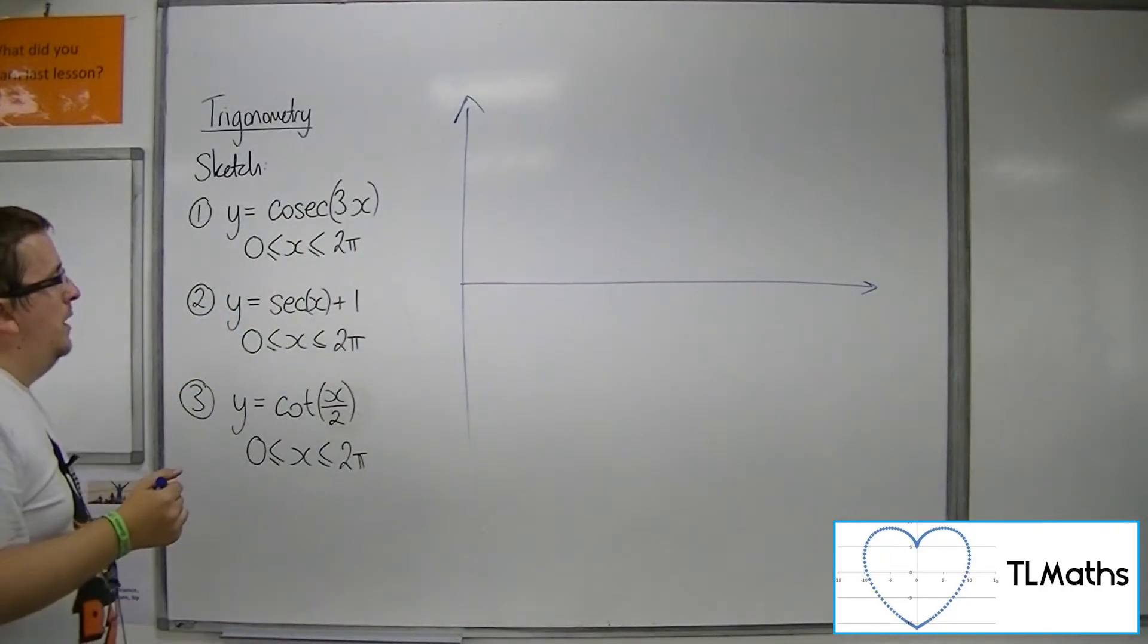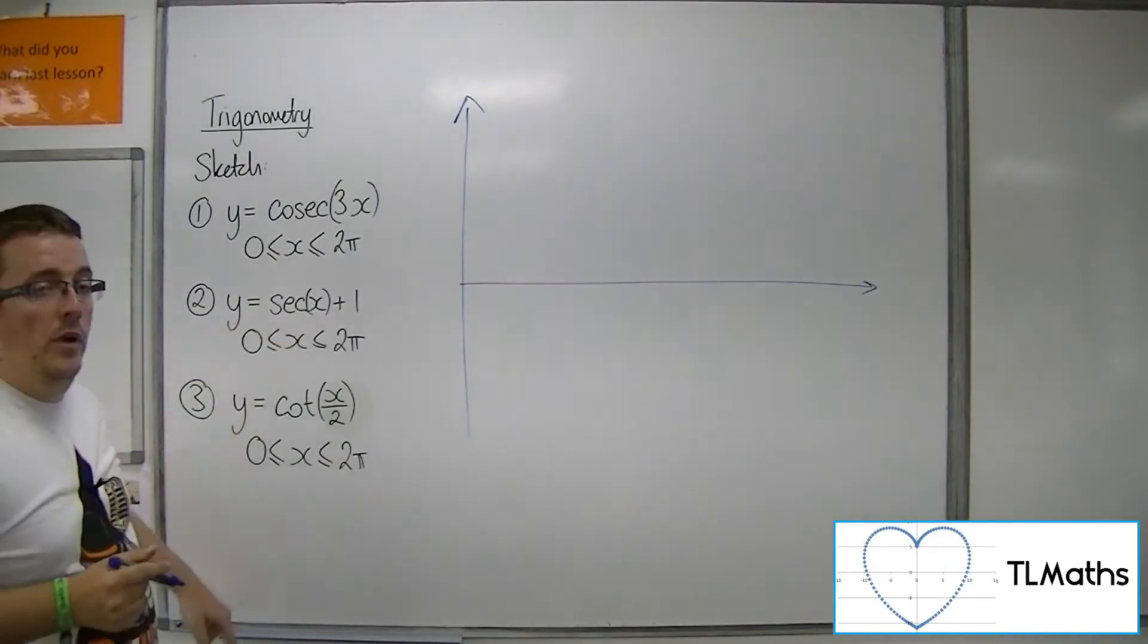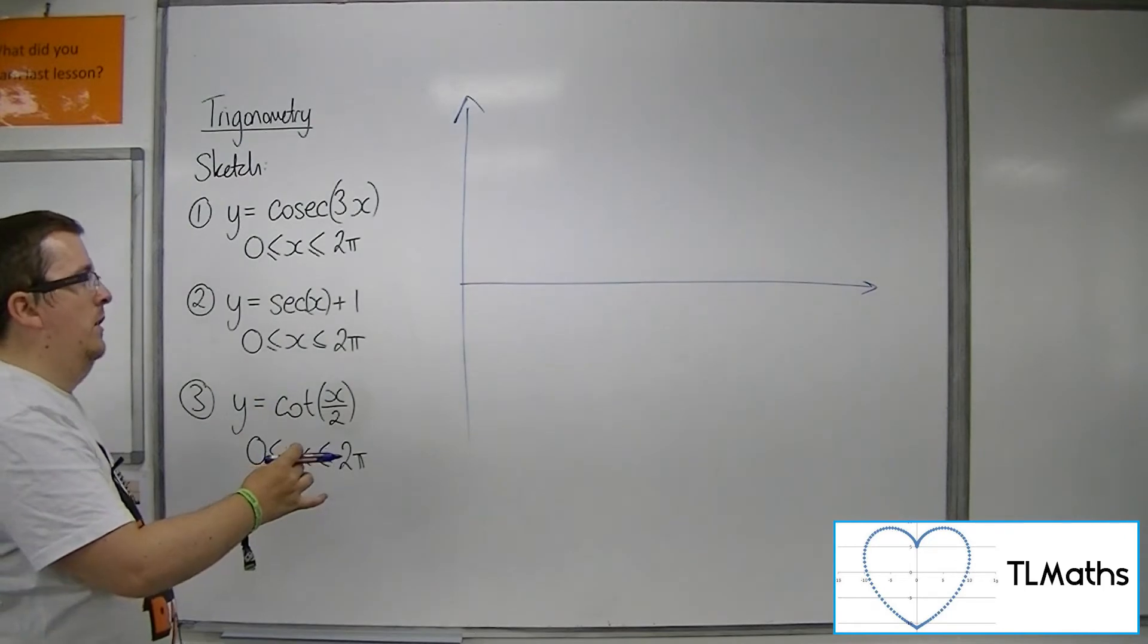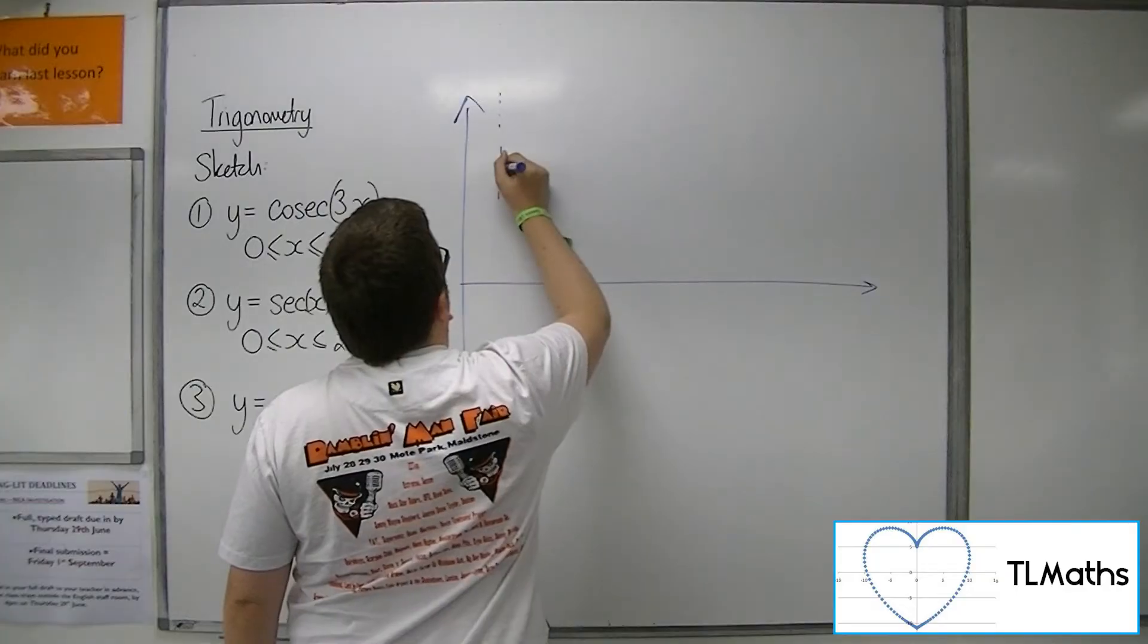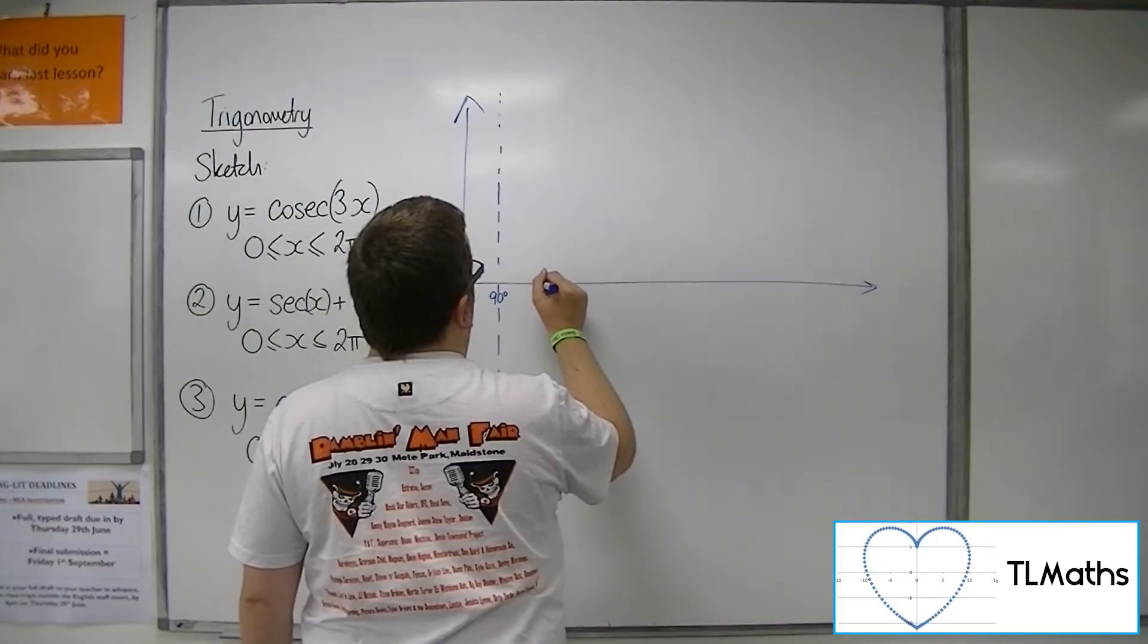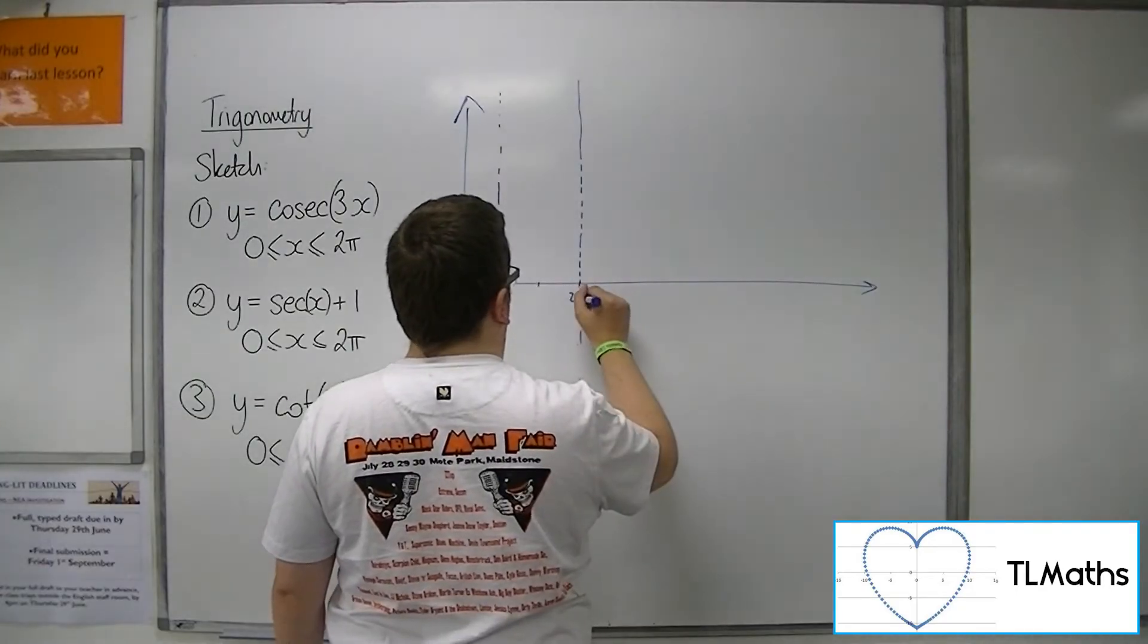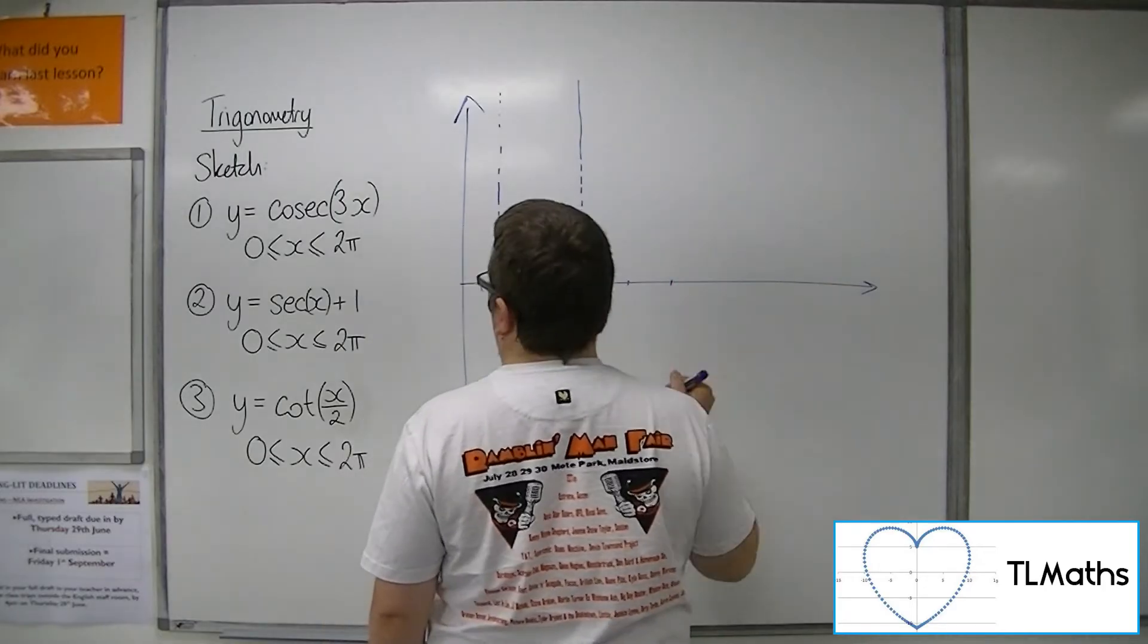So sec x is 1 over cos. Now, cos is 0 at 90 and then again at 270. So we're going to have an asymptote at 90. Then we've got 180. Then we're going to have this asymptote at 270. Then we've got 360. Then we've got an asymptote 450, etc.